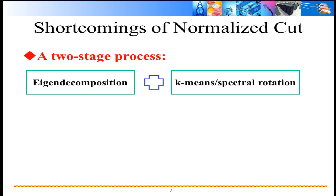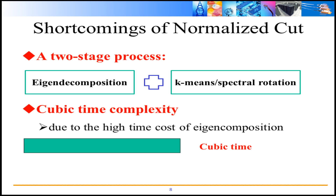However, the 2-step clustering and cubic time complexity are two big shortcomings of N-cut, and it's impossible to use it on large-scale data. So, how to enable N-cut to scale to large-scale data is our focus.